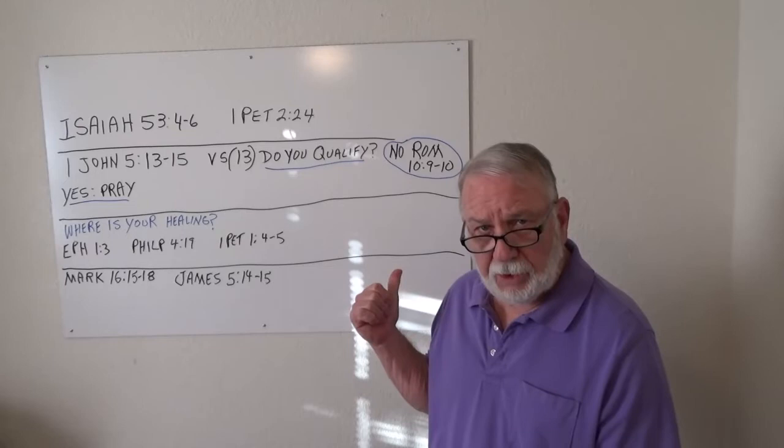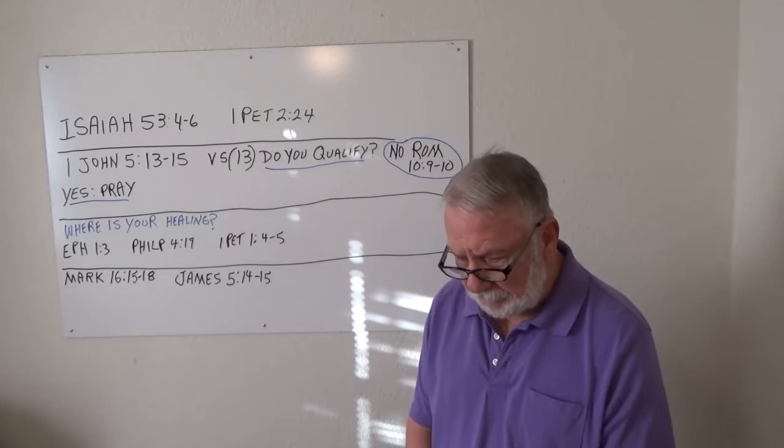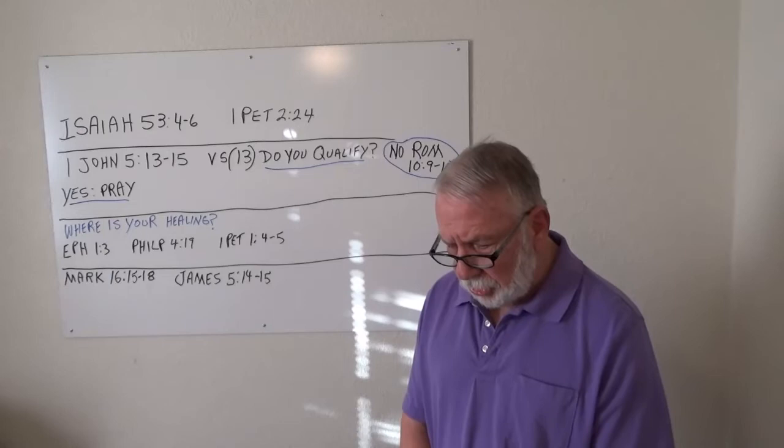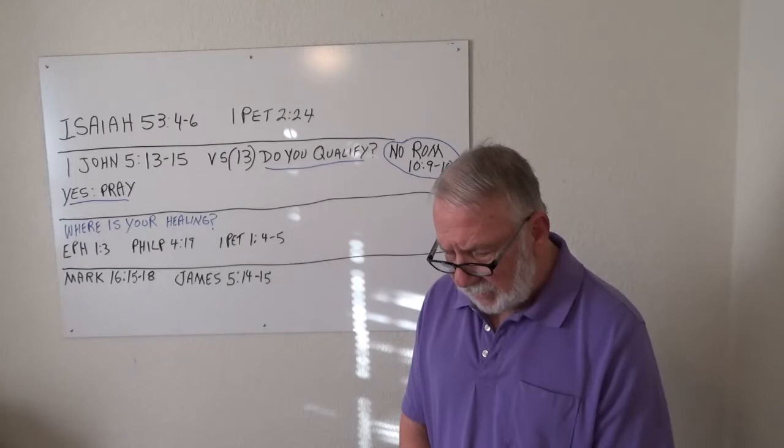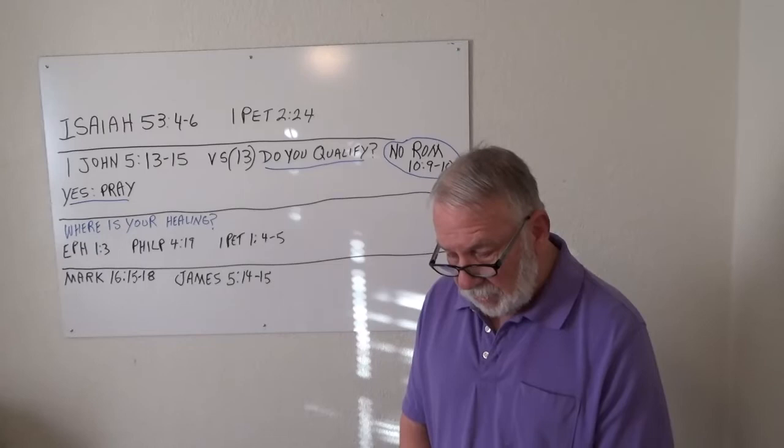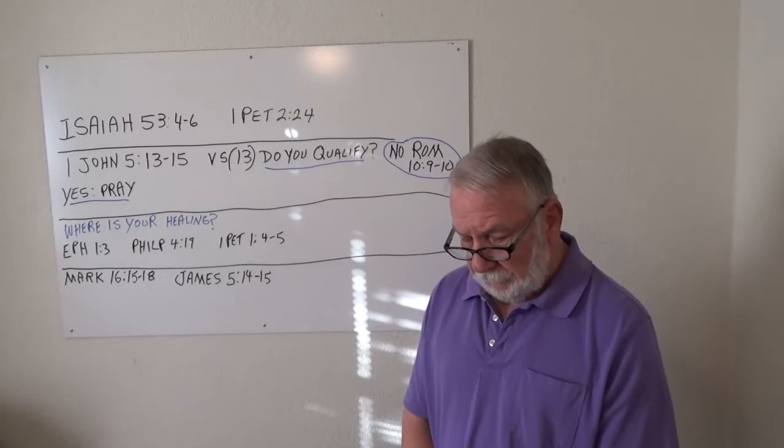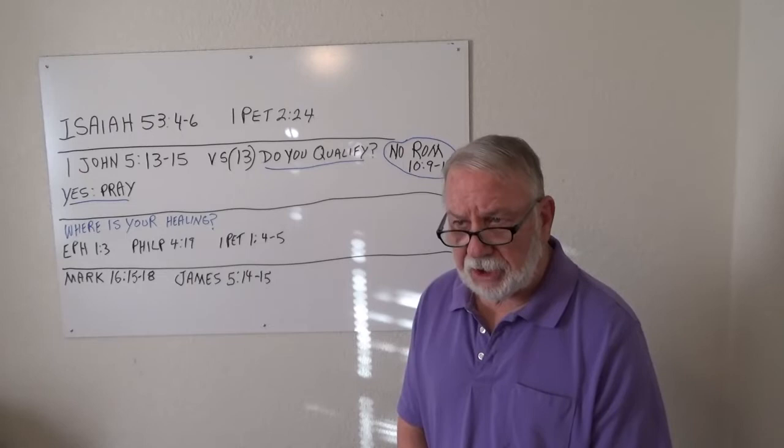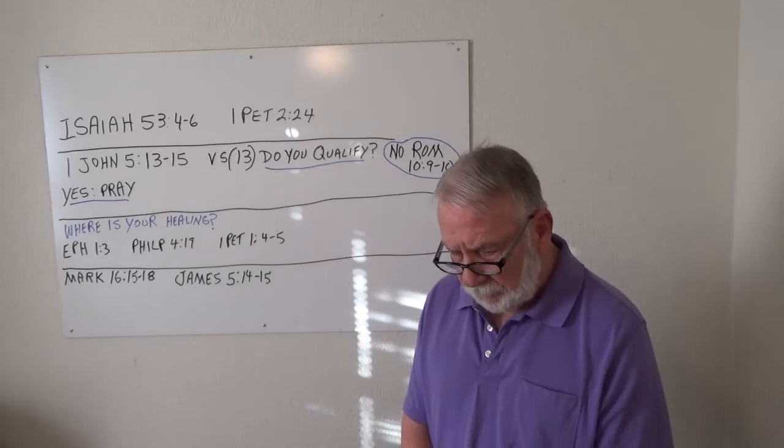First one's going to be Isaiah 53. I've written the Scriptures on the board over here. Isaiah 53: Surely He took up our infirmities and carried our sorrows. Yet we considered Him stricken by God, smitten by Him, and afflicted. But He was pierced for our transgressions. He was crushed for our iniquities. The punishment that brought us peace was upon Him, and by His wounds we are healed.